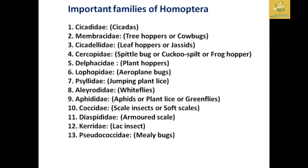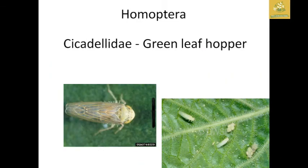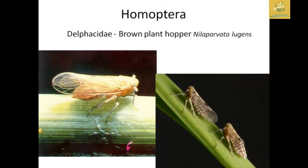In Homoptera, the family Aphididae is mainly composed of aphids. They have a pear-shaped body and a pair of cornicles on the fifth and sixth abdominal segments. Cicadellidae is composed of green leafhoppers (GLH), which are important vectors of tungro and other plant viruses.